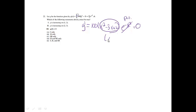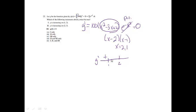Making a g prime sign chart with 1 and 2: plugging 0 in gives positive g prime, plugging 1.5 in gives negative g prime, and plugging 3 in gives positive g prime. So g is decreasing on (1, 2) — statement I is false. G is increasing on (2, 3) — statement II is true.